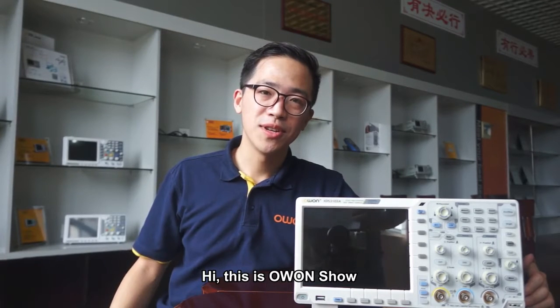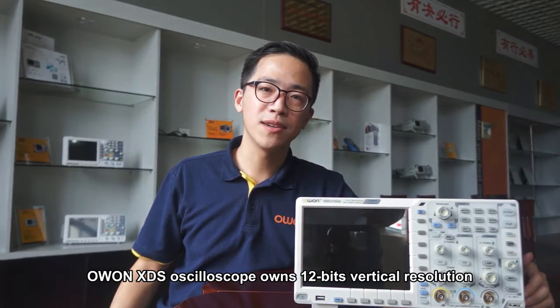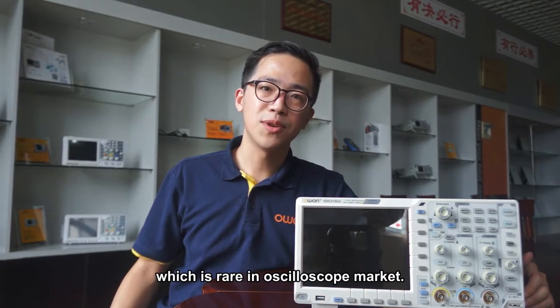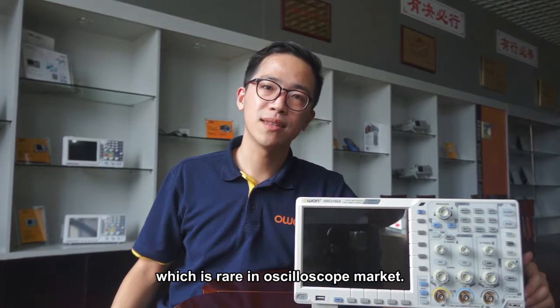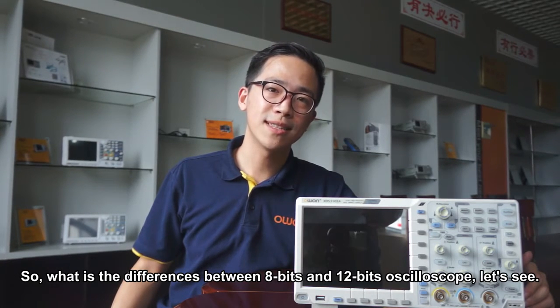Hi, this is OWON Show. OWON XDS oscilloscope owns a 12-bit vertical resolution, which is rare in the oscilloscope market. So what is the difference between 8-bit and 12-bit oscilloscopes? Let's see.